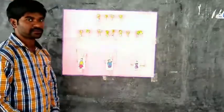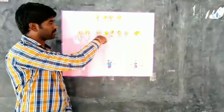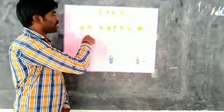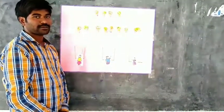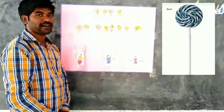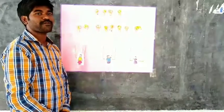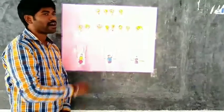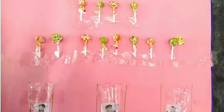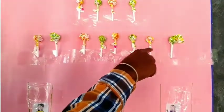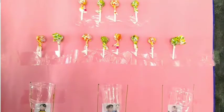Children, what do you see on the chart? Yes, very good. These are lollipops. Children, do you like lollipops? Yes, we all like lollipops very much. Okay children, we will eat these lollipops after the completion of class. First, we will count how many lollipops are there on the chart. Will you count with me?